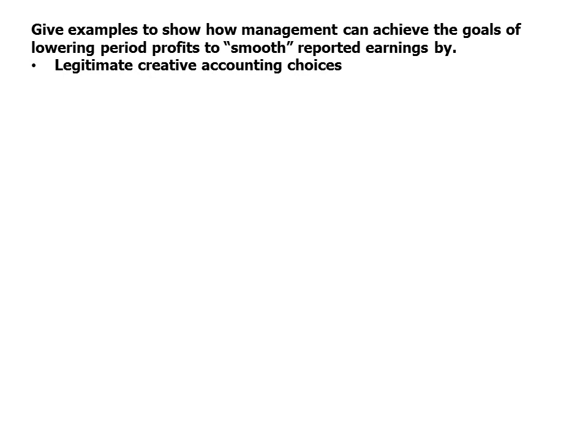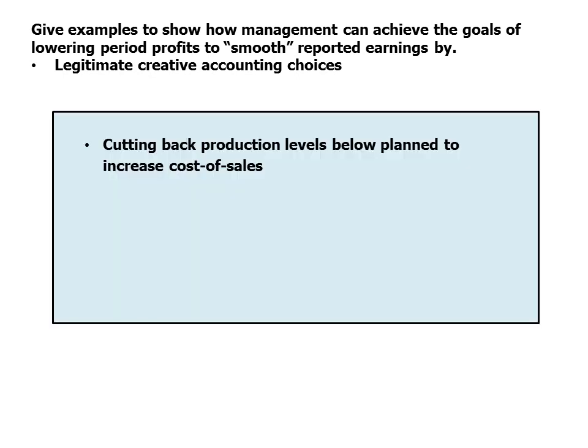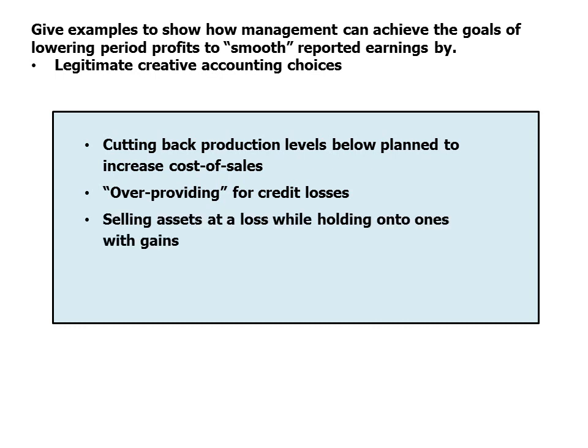Legitimate creative accounting choices to lower period profits include: cutting back production levels below plan to increase cost of sales through under-recovery of manufacturing overheads; over-providing for credit losses by making greater charges to the impairment allowance than required (creating an opportunity to write back these over-provisions later); selling assets that show a loss while holding on to those with gains; and taking the opportunity to aggressively write down impaired assets.